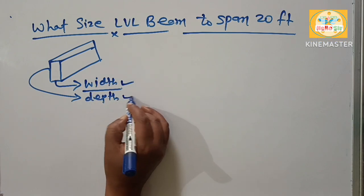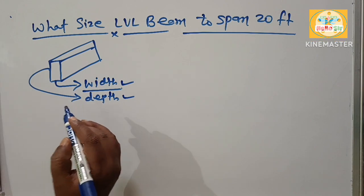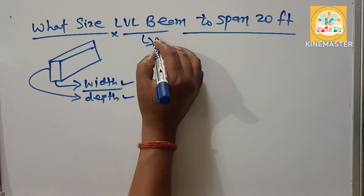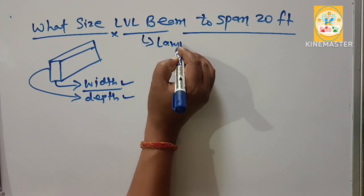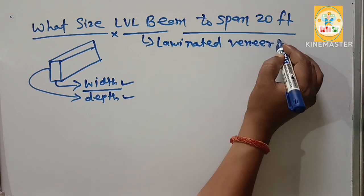You know that the LVL beam full form is Laminated Veneer Lumber.